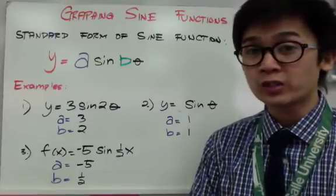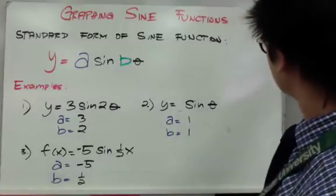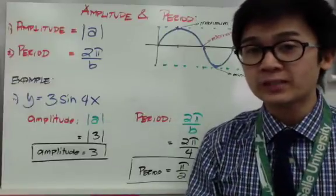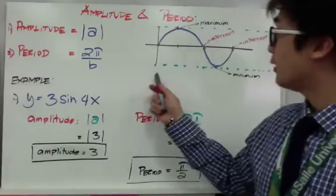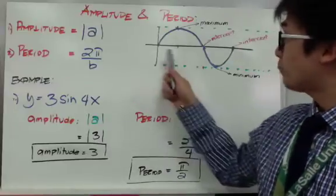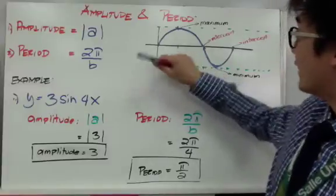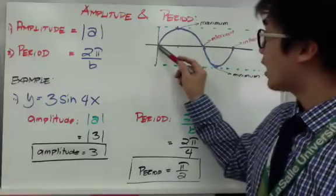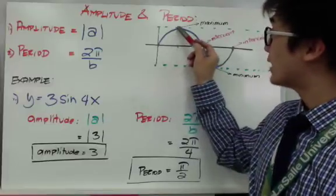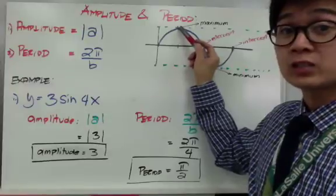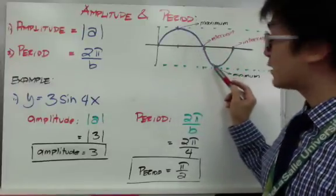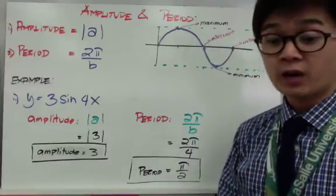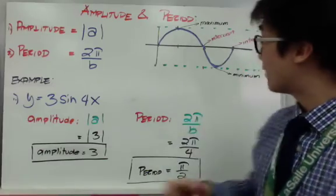Now let's start graphing a sine function. The graph of a trig function is periodic — it repeats with the same behavior over and over again. One period of a sine function has its intercepts and a maximum and minimum point. The behavior always starts at (0, 0), goes up to the maximum point, comes back down through the x-axis, goes down to the minimum point, and then starts going up again.